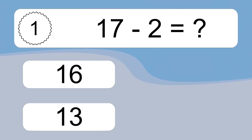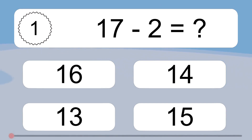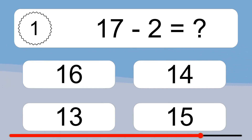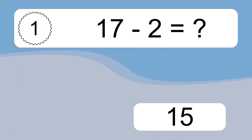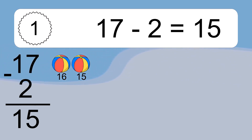17 minus 2 equals what? 17 minus 2 equals 15. Let's count it! 16, 15.